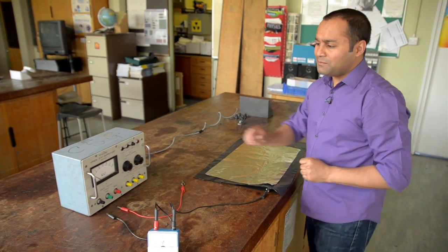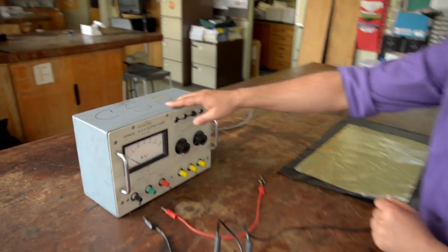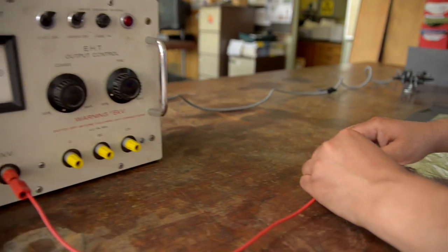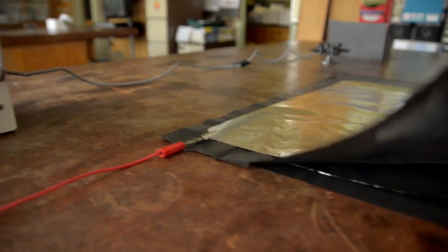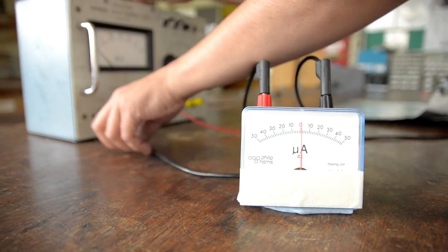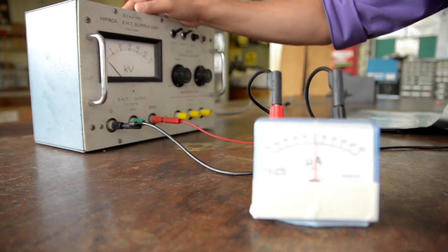You can charge this capacitor up using an extra high-tension power supply. I'm going to connect the positive terminal to the top plate, and I've got the bottom plate connected via this center zero microammeter to the negative terminal.